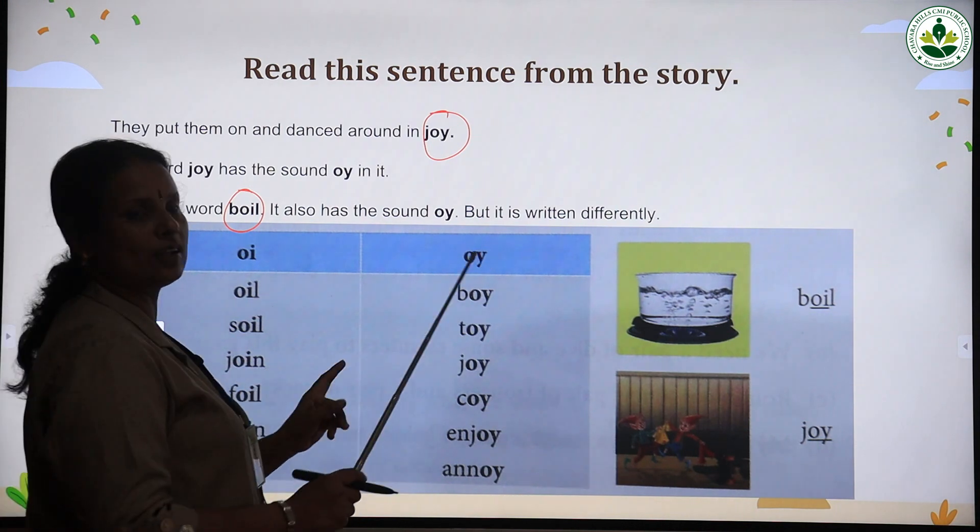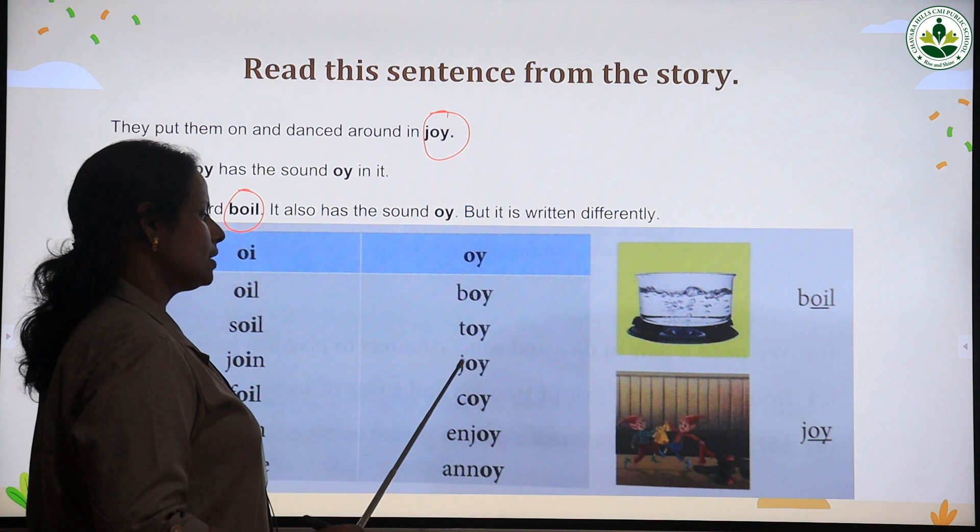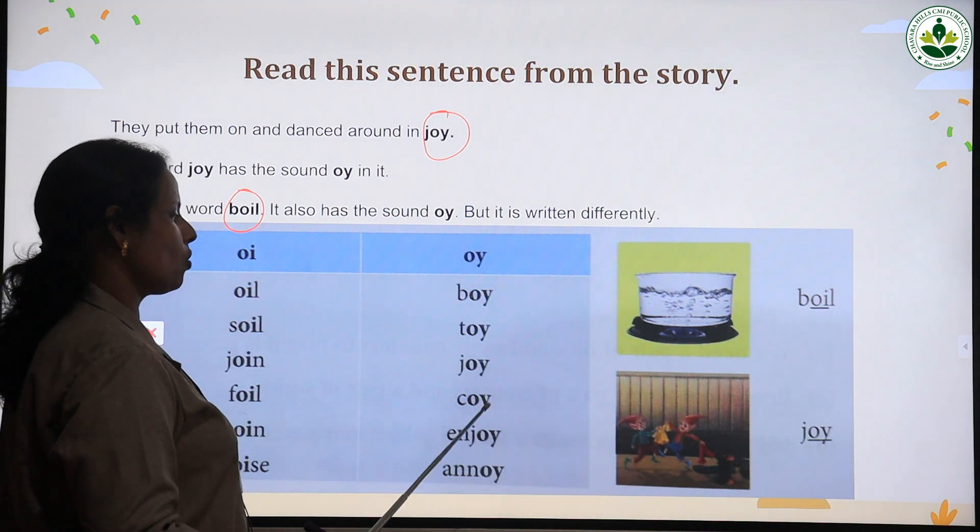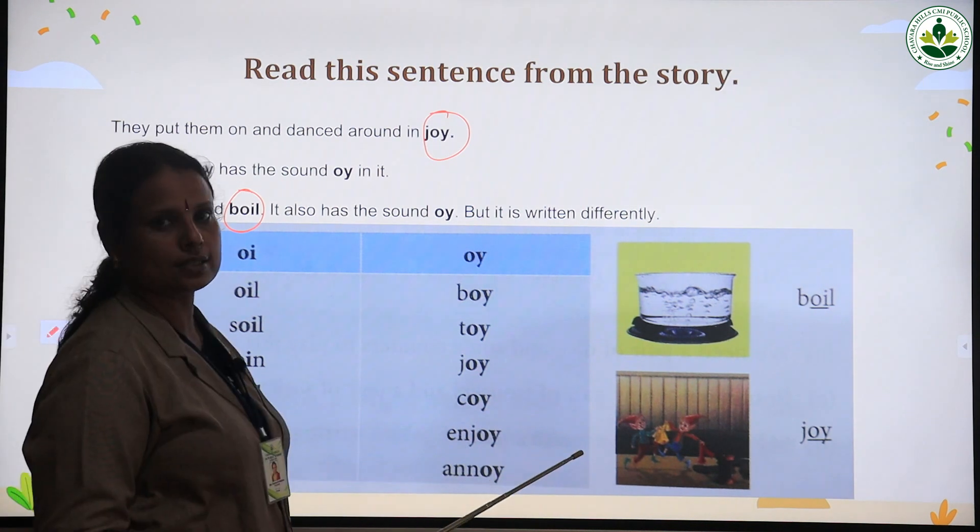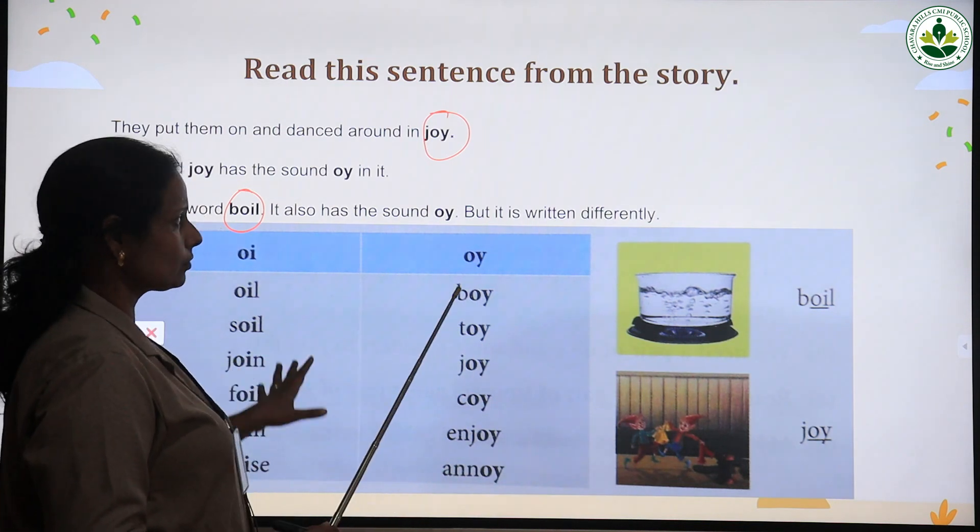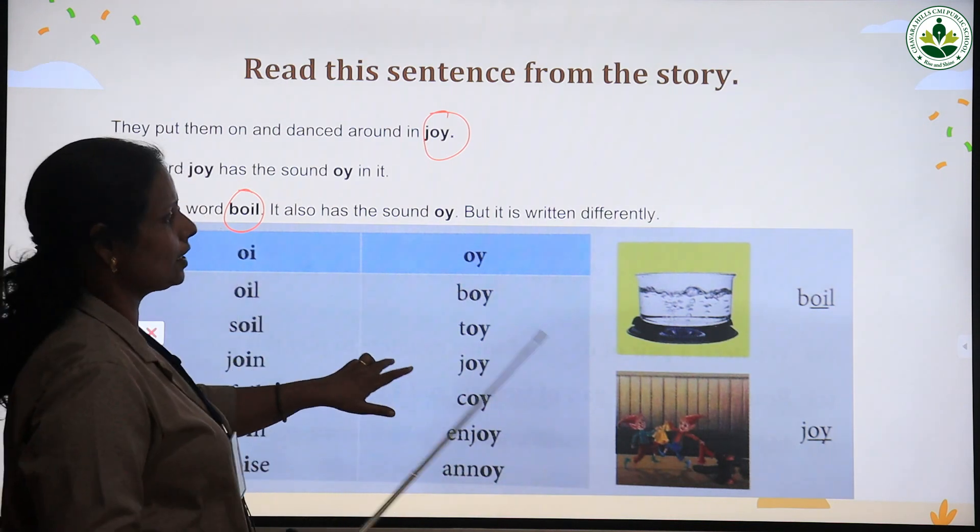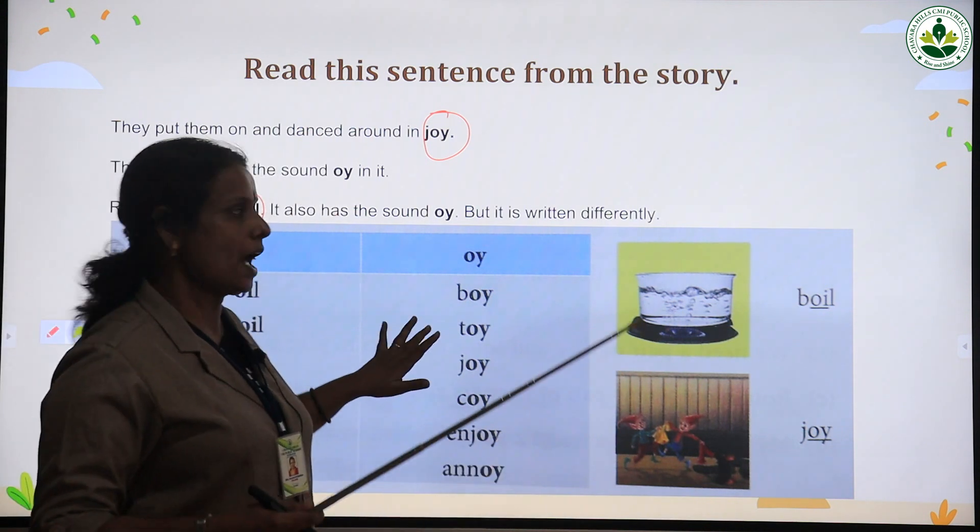Here are words with o and y: boy b-o-y, toy t-o-y, joy j-o-y, coy c-o-y, enjoy e-n-j-o-y, annoy a-n-n-o-y. Boil means we boil the water. Joy means happiness.